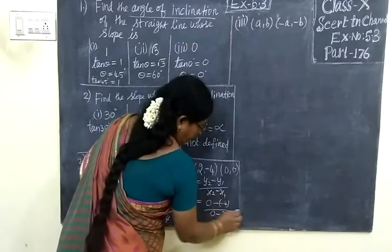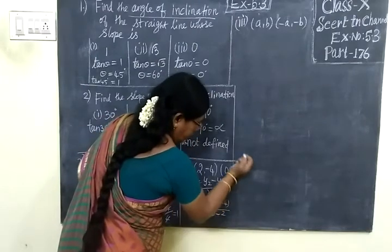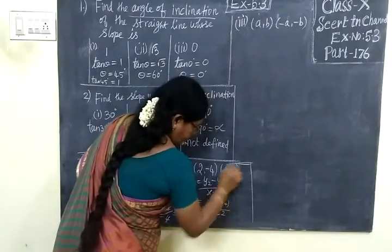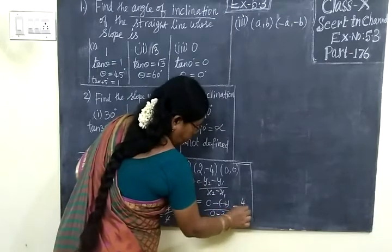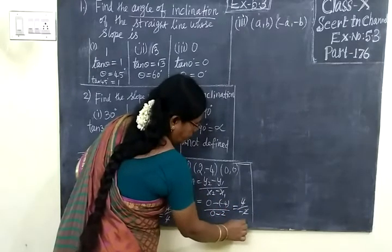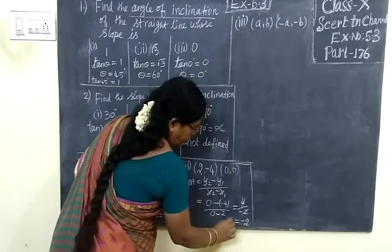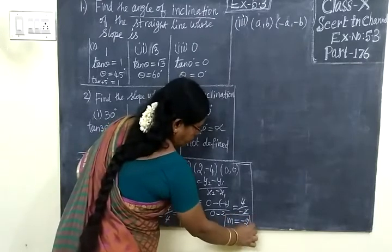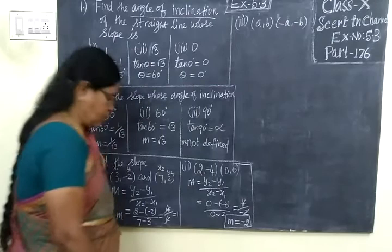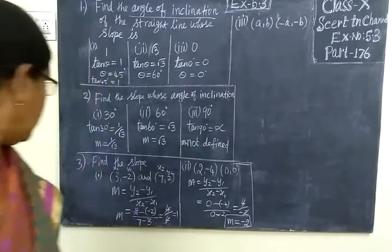So this equals minus into minus is plus. So 4 by -2, if we cancel here, -2. Let me check the answer for the third one.